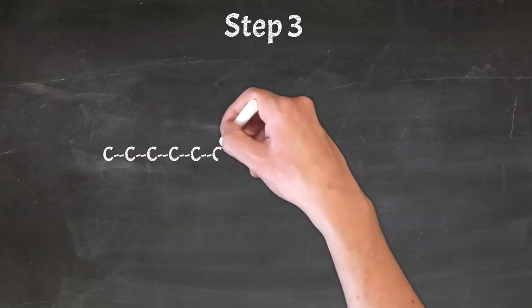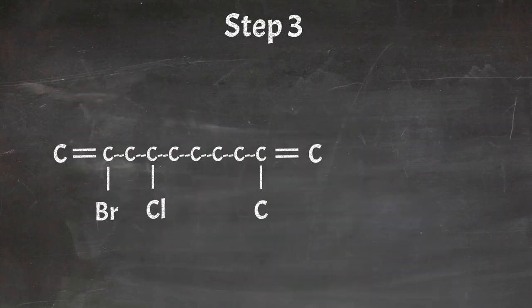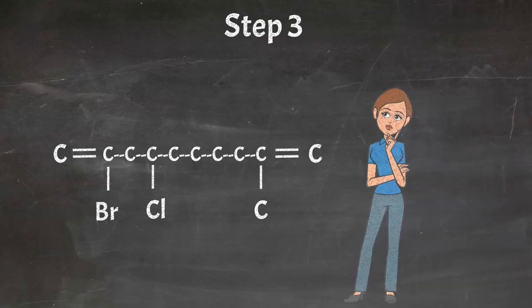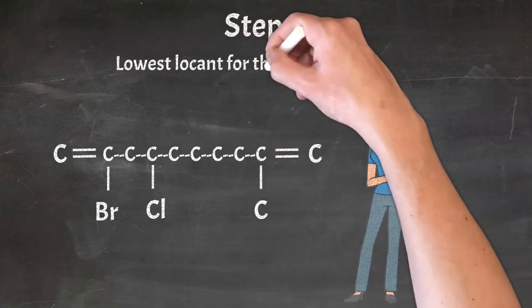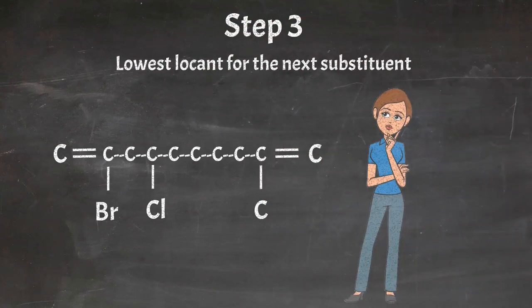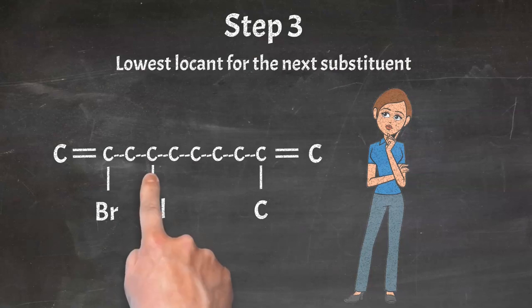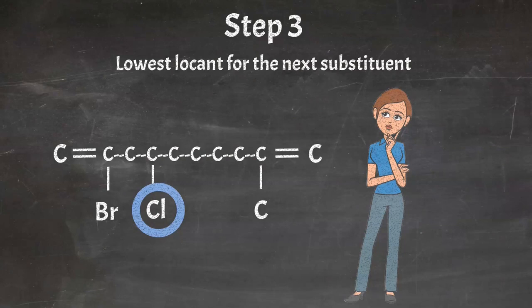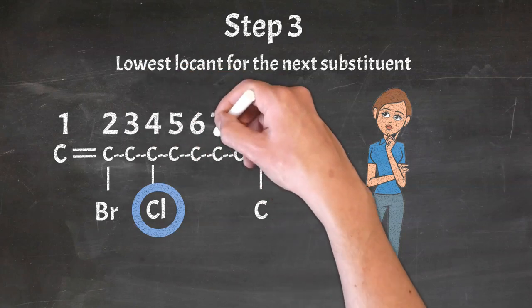If the first substituent falls at the same position from both ends, look for the next substituent. The next substituent is chlorine from both ends. From the left side it is at position 4, while from the right it is at the 7th position. From this we conclude that this chain must be numbered from the left side.